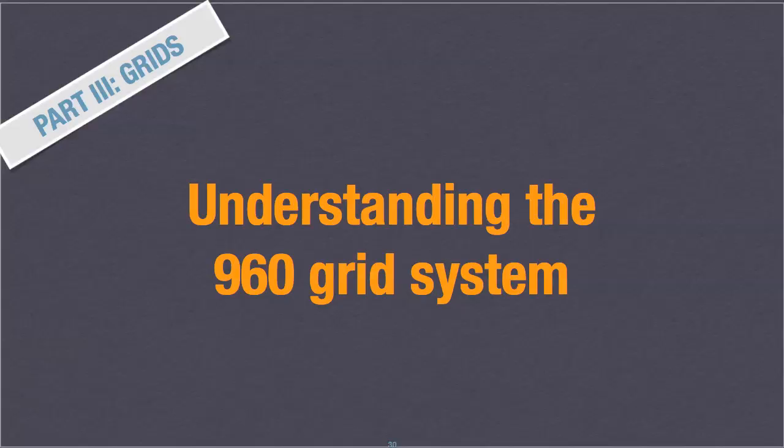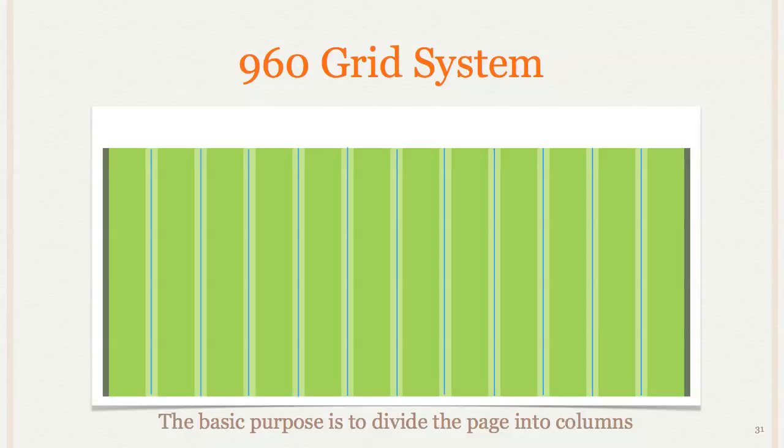So now we're going to apply what we know about the box model and floats to understand better how the 960 grid system works. Really, the purpose of the 960 grid system is to divide the page into columns.